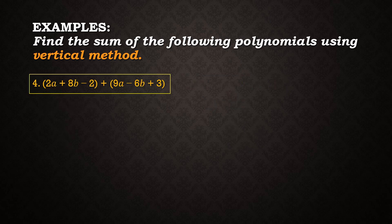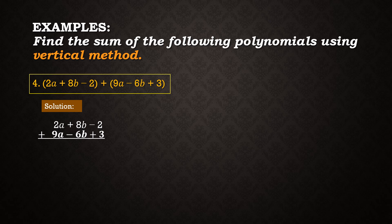Example 4 — this time we are going to add trinomials. We are going to add 2a plus 8p minus 2 plus the quantity 9a minus 6p plus 3. We write them vertically by aligning similar terms. So we have 2a plus 9a is equal to 11a. 8p plus negative 6p is 2p. And negative 2 plus 3 is equal to 1. Therefore, our final answer is 11a plus 2p plus 1.